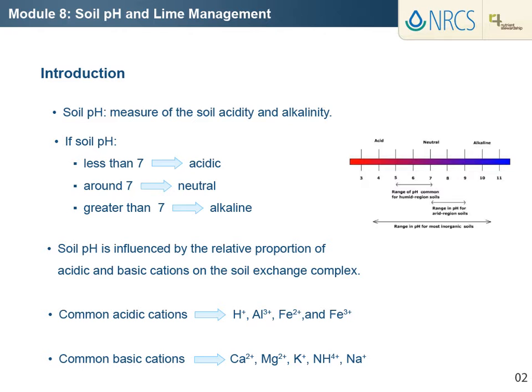Because pH is a logarithmic function, each unit on the pH scale is 10 times less acidic or basic than the unit above or below it. For example, a solution with a pH of 6 has a 10 times greater concentration of hydrogen ions than a pH of 7, and 100 times higher concentration than pH 8.